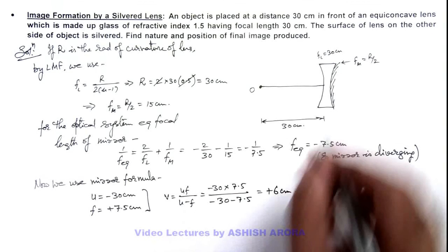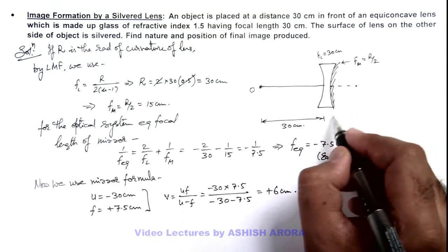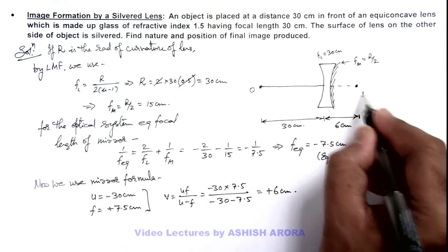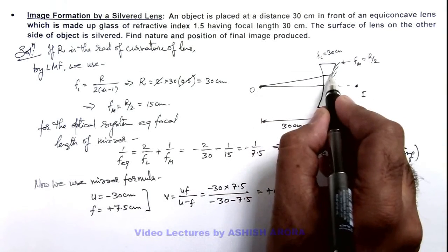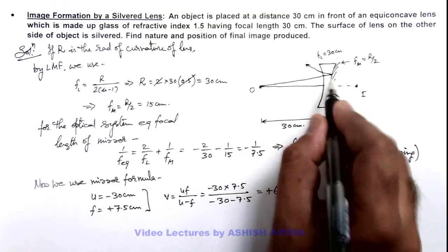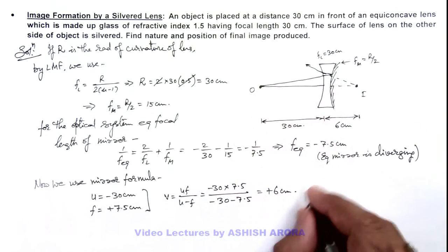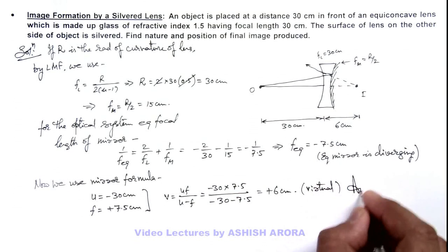That means the image is produced at the back of this optical system at a distance 6 centimeter from it. And light ray is first refracted, then reflected, and finally refracted out in such a manner that it appears to be coming from this image. So the image produced here is virtual. This is a result of the problem.